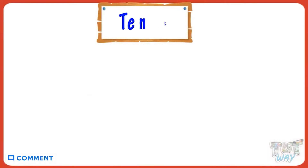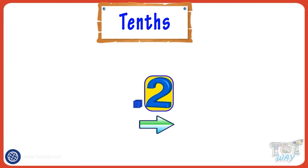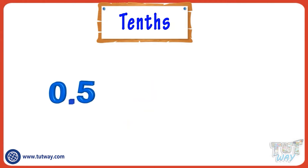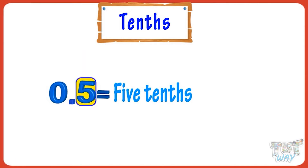Kids! Tenths have one digit after the decimal point. Like, 0.5 is 5 tenths, as there is only one digit to the right of the decimal point. So it is the tenths place, and we name it as 5 tenths.